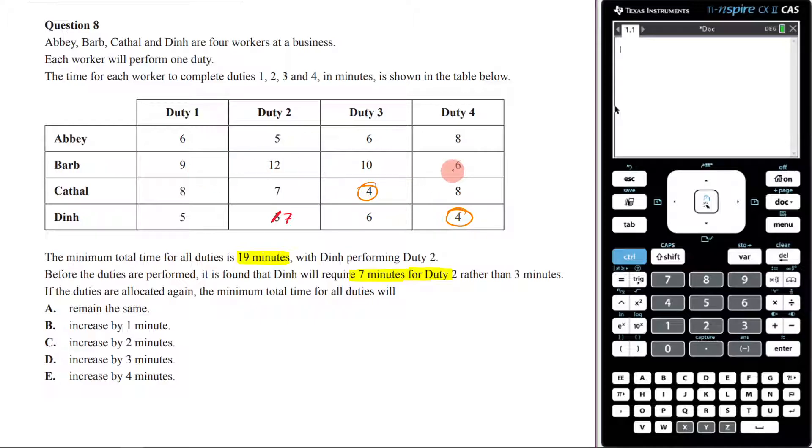Now, Barb, you'd want her to do 6, but you can't do 6 because Dean is doing 6. That means you're stuck with 12. 12 is a huge number. So what I would be thinking here, what if Dean instead did 5, and then Barb could do 6, and then Abby could do 5? That looks pretty good to me.